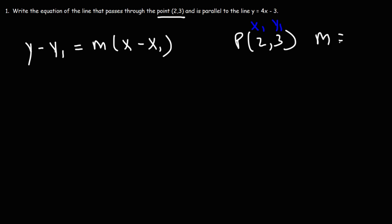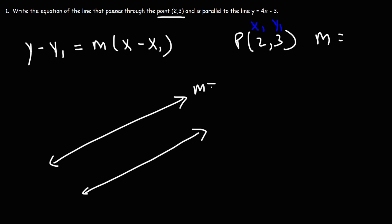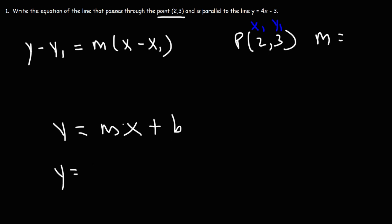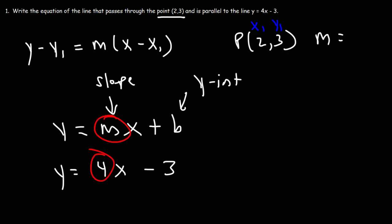We can determine the slope from the fact that we're looking for a line parallel to y equals 4x minus 3. Two parallel lines have the same slope. That line is in slope-intercept form, y equals mx plus b, where m is the slope and b is the y-intercept. So y equals 4x minus 3 clearly shows the slope is 4. Because the lines are parallel, the slope of the line we're finding is also 4.